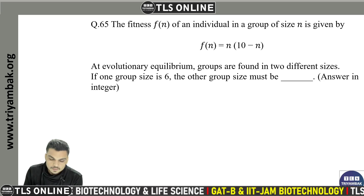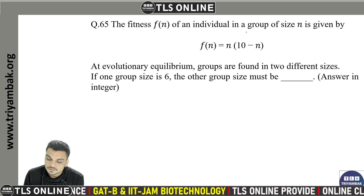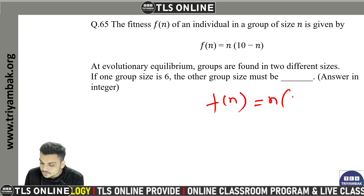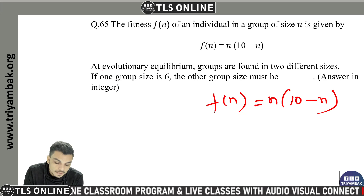The fitness function f for an individual in a group of size n is given. The frequency of n is equal to n times 10 minus n. At evolutionary equilibrium — meaning no further changes occur — this condition holds.